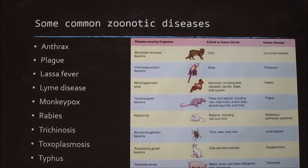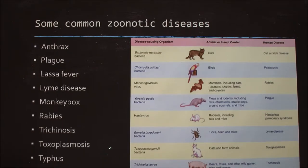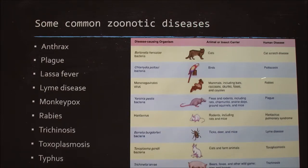Here's a bunch of common ones, and here's a nice diagram I found online. On the left is what causes the disease — bacteria, fungi, a virus — then the animal, and then what it causes in humans. Probably everyone's heard of cat scratch fever, rabies of course, the plague, and Lyme disease. Really, really common. That's a nice little figure.